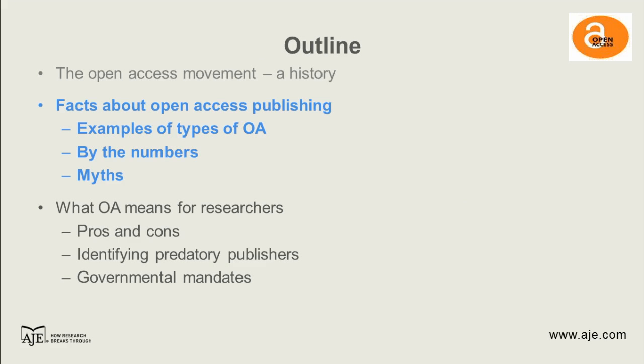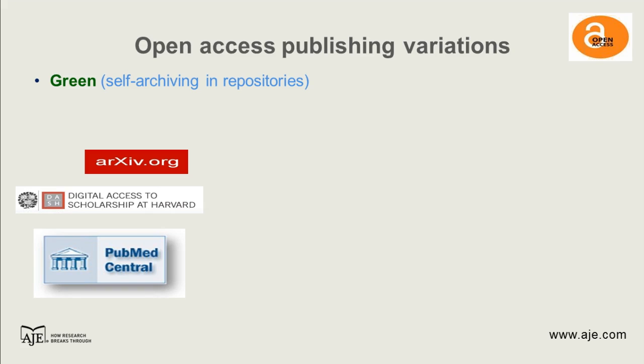Now that we've got the history down, I want to spend a little more time diving into what we actually know about open access publishing — different types of open access, different types of journals and publishers, some of the data we have about the costs, the number of journals, and then to talk about a few of the myths that we've encountered about open access and what the truth is behind them. There are a couple of different varieties — or in this case colors — of open access that are being used in different ways, and I wanted to define two of those here.